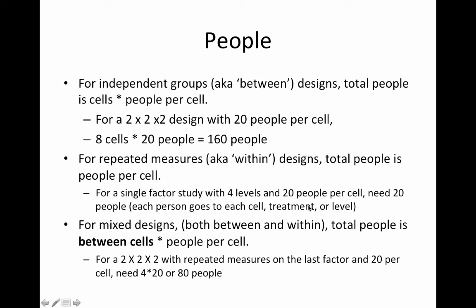For mixed designs — both between and within — the total people equals between-cells times people per cell. So if we had a two-by-two-by-two with repeated measures on the last factor and twenty people per cell, we'd need four (that's the first two factors) times twenty, or eighty people total. In the completely between design we'd need 160, completely within we'd need twenty, and the mixed design with the last factor repeated we'd need eighty.